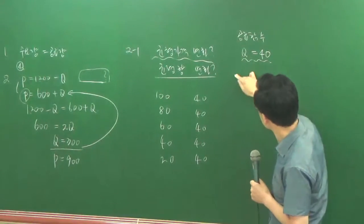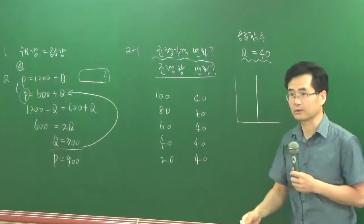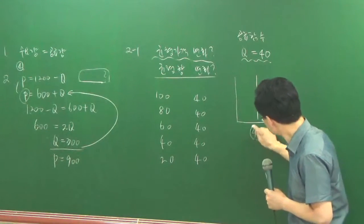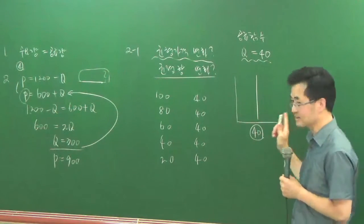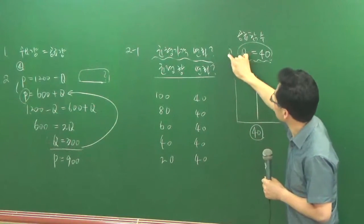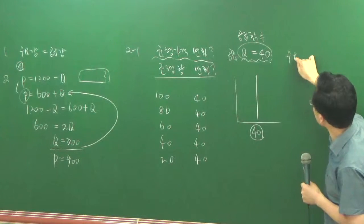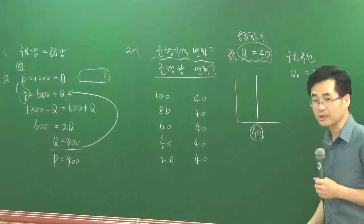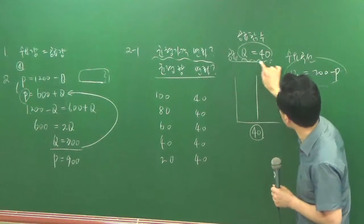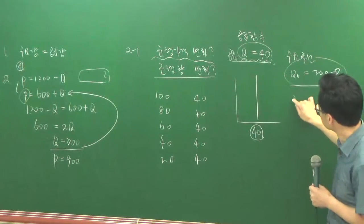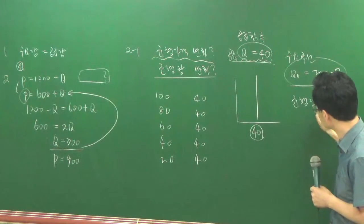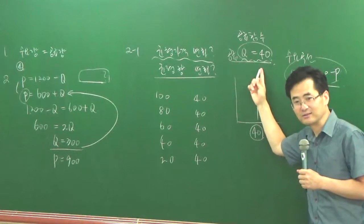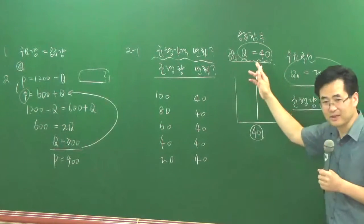공급함수가 Q=40 이렇게 돼 있다. 이 소리는 공급곡선이 수직이다. 이런 상태에서 만약에 공급곡선과 수요곡선이 QD는 200 마이너스 P다 이렇게 있다면, 이 공급곡선과 수요곡선으로 균형 양을 물으면 뭐라고 대답하는 거예요? 균형 양을 물으면 계산할 필요도 없이 40이란 얘기예요. 이걸 또 직접 계산해봐야 결국 40 나오는 거예요.